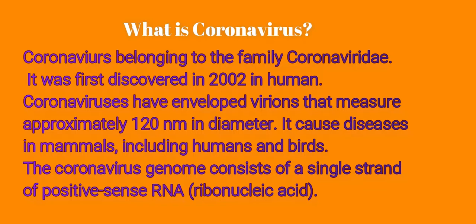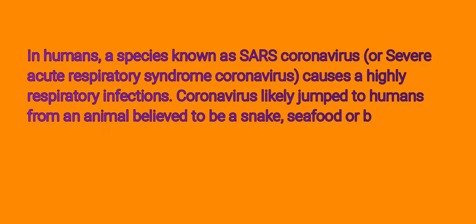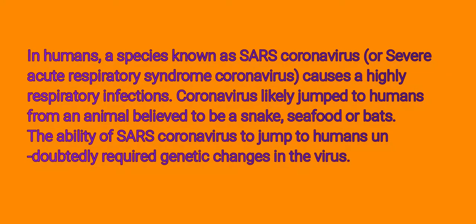It causes diseases in mammals including humans and birds. The coronavirus genome consists of a single strand of positive-sense RNA, a ribonucleic acid. In humans, a species known as SARS coronavirus, or Severe Acute Respiratory Syndrome coronavirus, causes highly severe respiratory infections. Coronavirus likely jumped to humans from animals, believed to be snakes, seafood, or bats. The ability of SARS coronavirus to jump to humans undoubtedly required genetic changes in the virus.